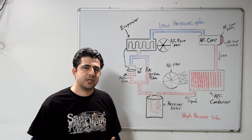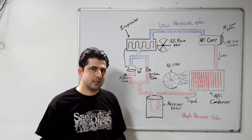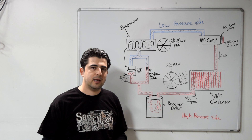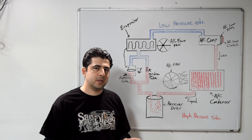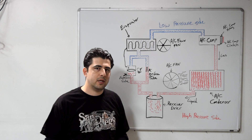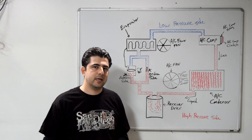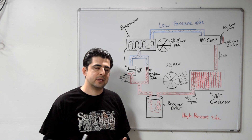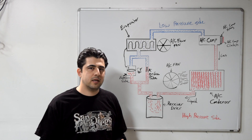Now that you know how an AC pressure gauge set looks, let's talk about what you can do to diagnose problems if you don't have one. Before we get further, I need to mention that in order to do any kind of diagnostics, your AC compressor clutch must be engaging. If it's not engaging, it's probably due to low refrigerant. If your compressor clutch is engaging and you're still not getting cold air from your vents, then you can proceed with this video.